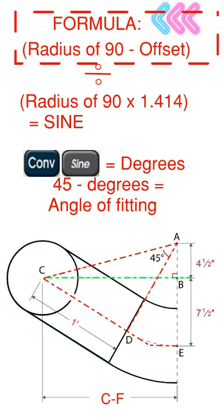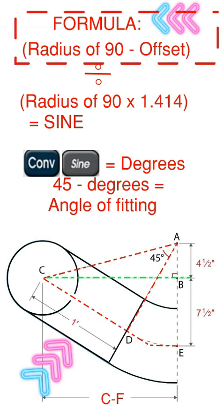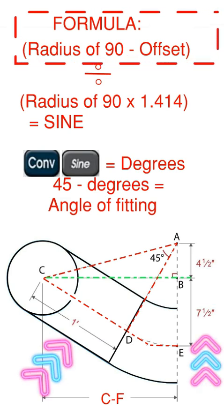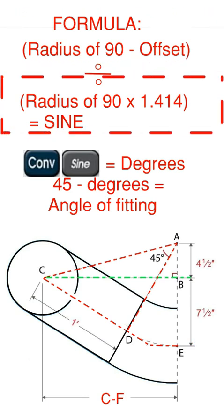So this is the formula we're going to follow. In parentheses we're going to take the radius of the 90, we're going to minus the offset, we're going to divide by in parentheses the radius of the 90 times 1.414. Close it out with parentheses. Press equals.